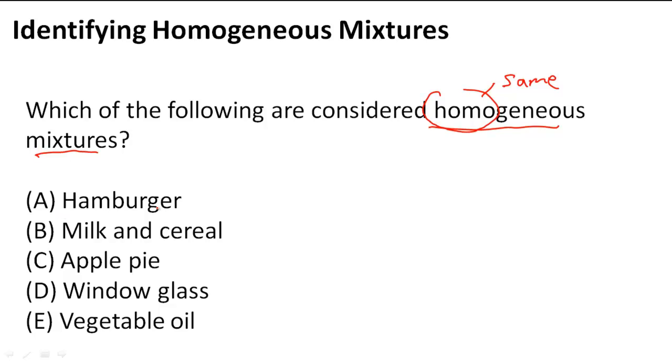So A, hamburger. We can tell the difference. We can see it's a mixture but we have bread, we have the hamburger meat, we have tomatoes, lettuce, whatever you like to put on your hamburger. So we can tell the difference between that even though it's a mixture. So it is not a homogeneous mixture.